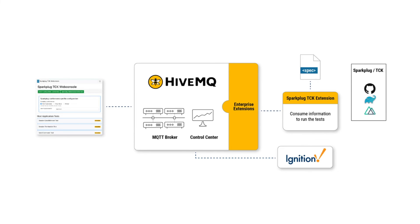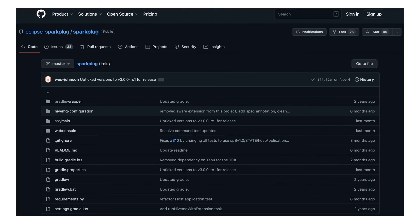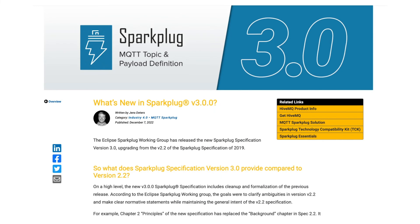The TCK is a web application that consists of a HiveMQ broker with a HiveMQ extension and a web interface. The web interface provides access to the compatibility tests. You can find the TCK in the Eclipse Sparkplug repository at GitHub — the link is below in the video description. For a detailed guide on how to build a Sparkplug TCK HiveMQ extension and the types of compatibility tests, follow the link to our full blog post on what's new in Sparkplug 3.0.